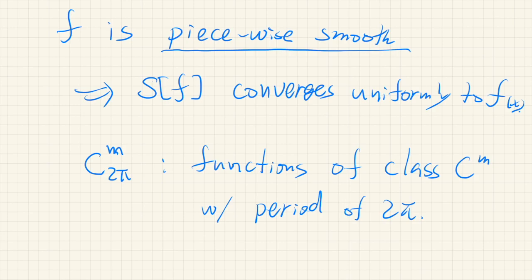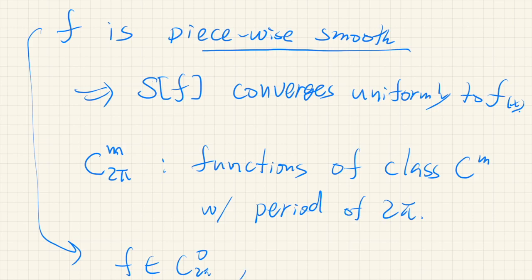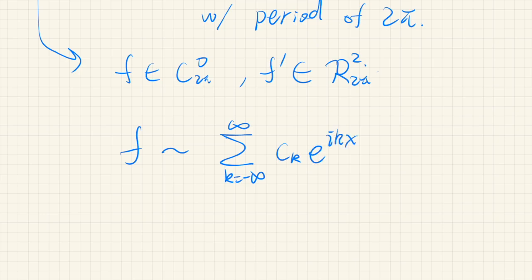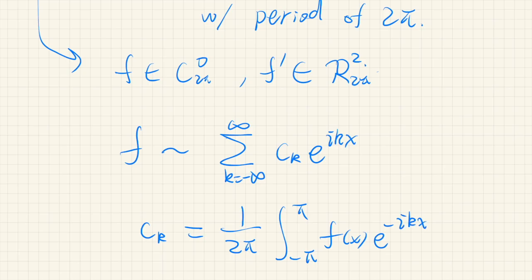We say f is piecewise smooth if f belongs to C_{2π,0}, meaning f is a continuous function, and f prime belongs to R_{2π,2}, that is square integrable. In this video we only consider the complex Fourier series: if f is given, its Fourier series is expressed as a sum with possibly complex coefficients c_k, where the Fourier coefficients are defined by the integral of f(x) times e^{-ikx} dx.